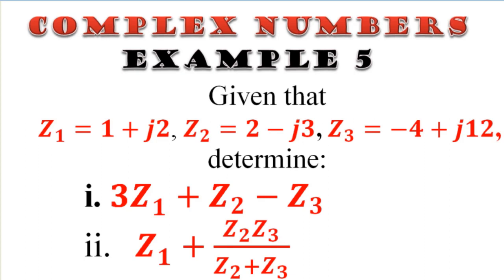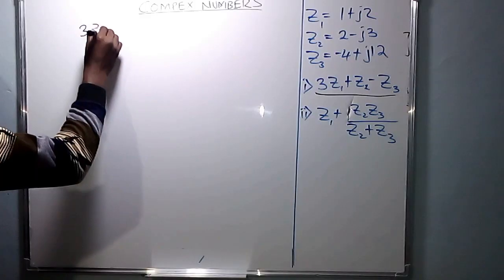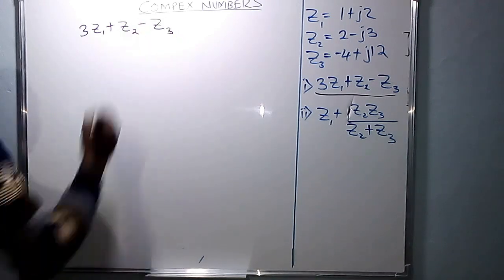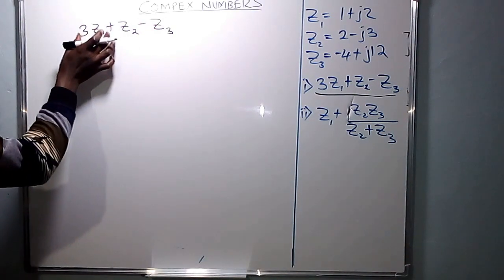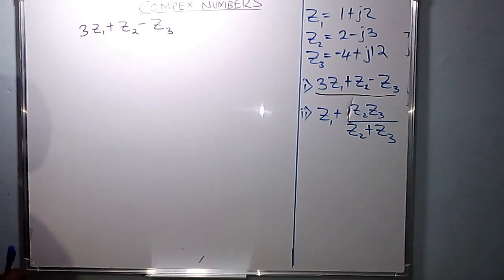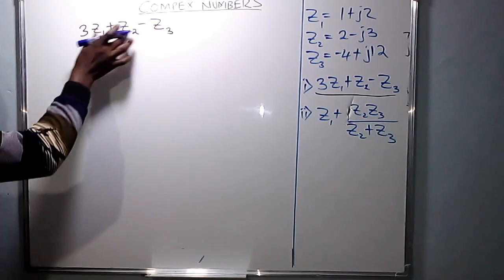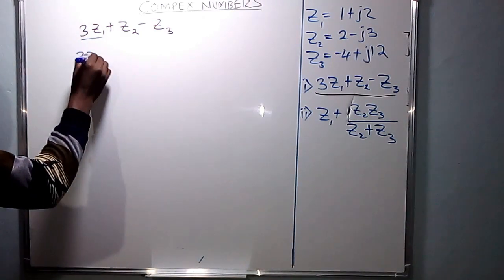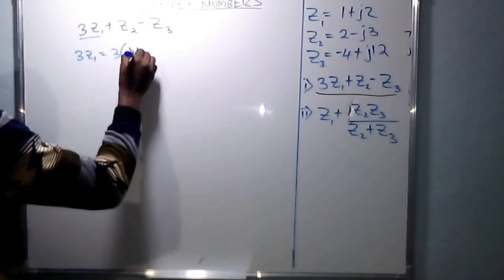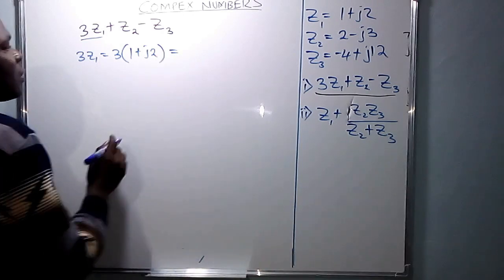So how do we solve complex numbers in Cartesian form? Starting with Roman numeral 1, we are told to determine 3Z1 plus Z2 minus Z3. We handle each and every term independently. The first term is 3Z1, that is 3 times Z1. Substitute the value of Z1, which is 1 plus j2.